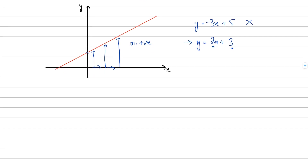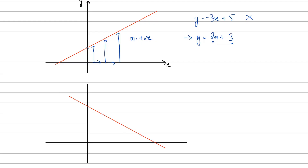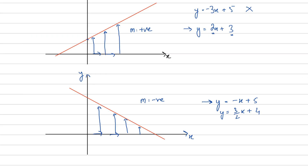What does a negative sloping line look like? Suppose you have your y-axis and x-axis, and a negative sloping line will look like this - once we move towards the positive x-axis, the line is falling, meaning its distance from the x-axis is increasing. So this line is going to have a negative slope. If I'm choosing between y = -x + 5 and y = (3/2)x + 4, I know that the falling line has a negative gradient, so its equation must be y = -x + 5.